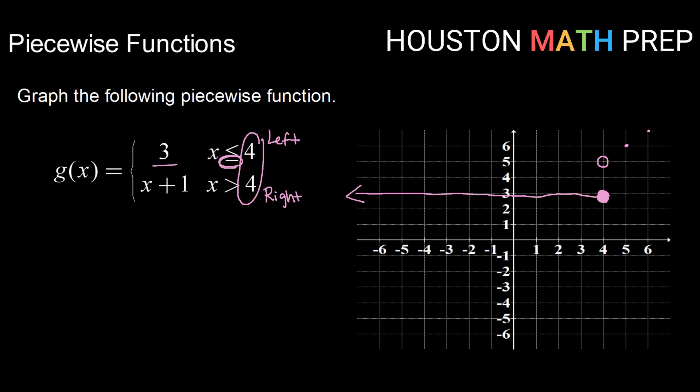And I can go ahead and connect through and indicate that we extend to the right indefinitely. So there's how we graph this g of x piecewise function. In general, remember, just graph each piece separately.